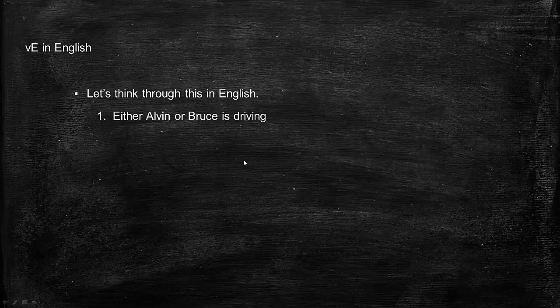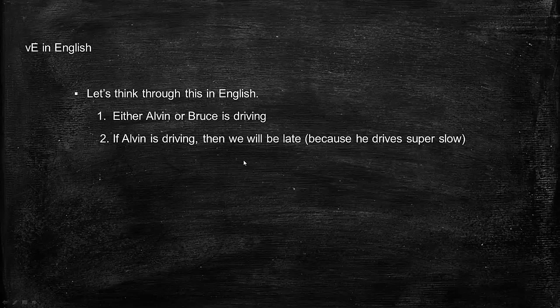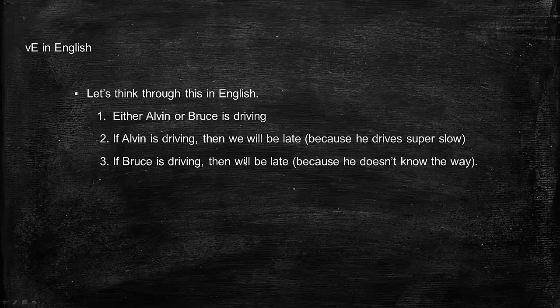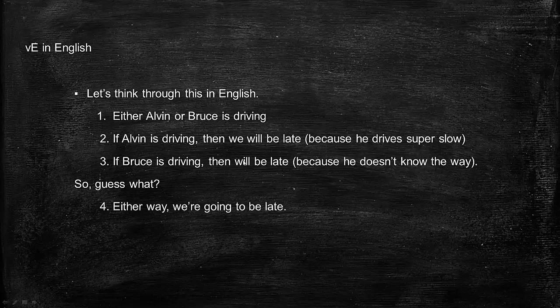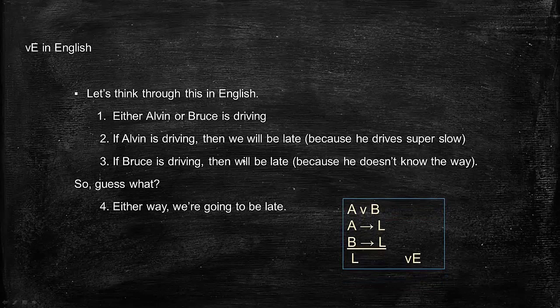We can think about it in English again. Either Alvin or Bruce is driving. If Alvin's driving, then we're going to be late because he drives super slow. If Bruce is driving, then we're going to be late as well because Bruce doesn't know the way. Well, what can we derive? Either way, we're going to be late. The reason we can say we're going to be late for sure is because we've given a reason for thinking it's true in either case. So: A or B — Alvin's driving or Bruce is driving; if Alvin, we're going to be late; if Bruce, we're going to be late; so in fact, we're going to be late.